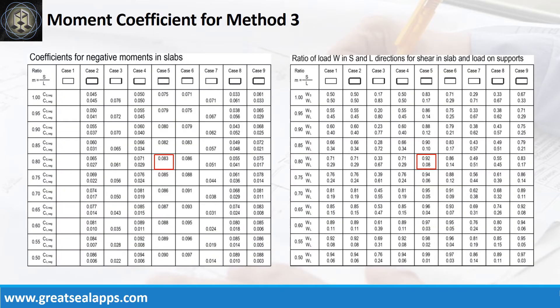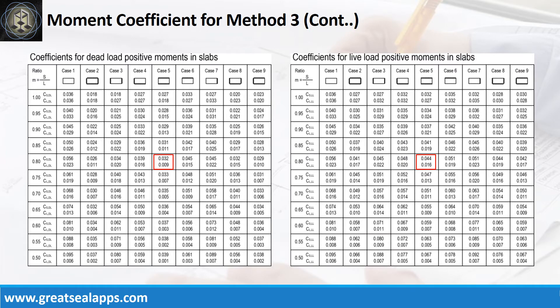Use case 5 at m equal 0.8. Refer to coefficients for negative moments and shear computations. Use case 5 at m equal 0.8. Refer to coefficients for dead load and live load positive moments.